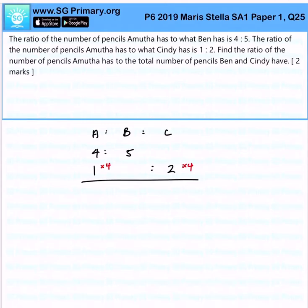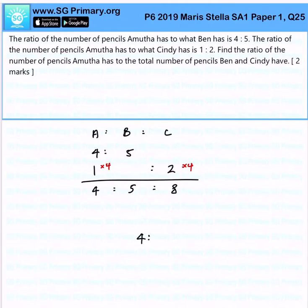So therefore we get a ratio of 4 to 5 to 8. From there, if they ask us what is the ratio of the number of pencils Amuta has to the total number of pencils Ben and Cindy has, that will be 4 to the sum of 5 and 8, which is 13. That is the solution for this question.